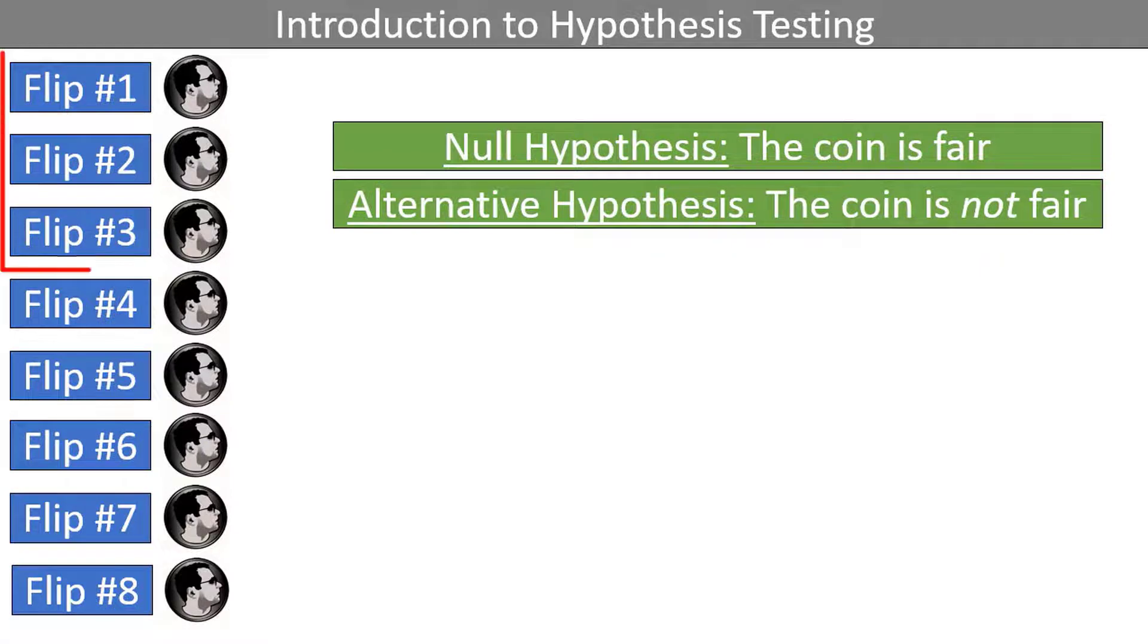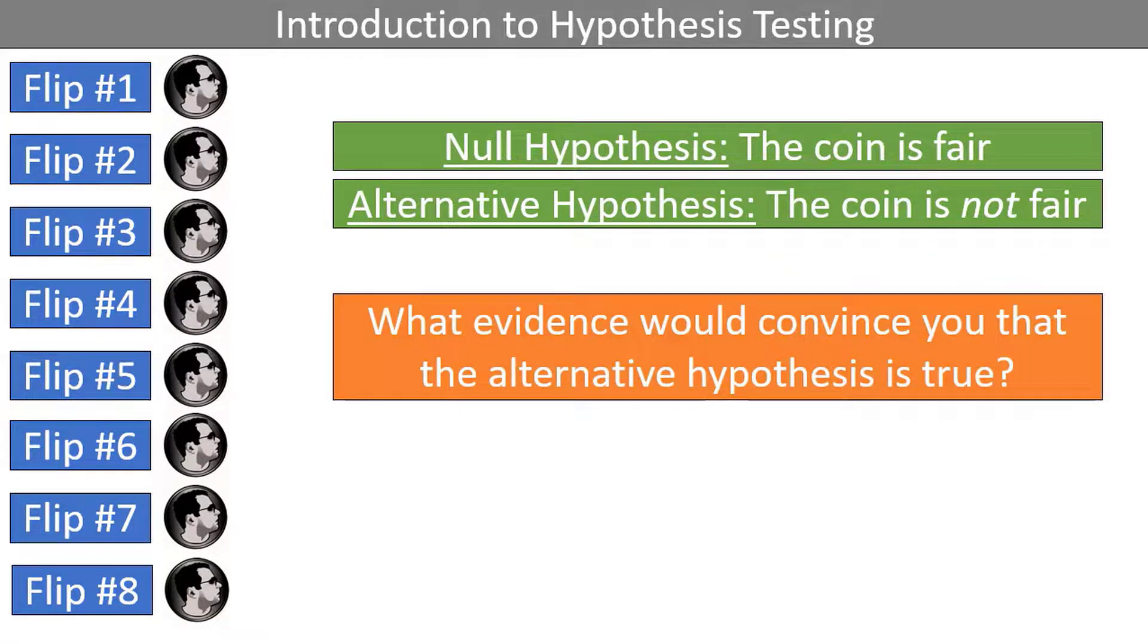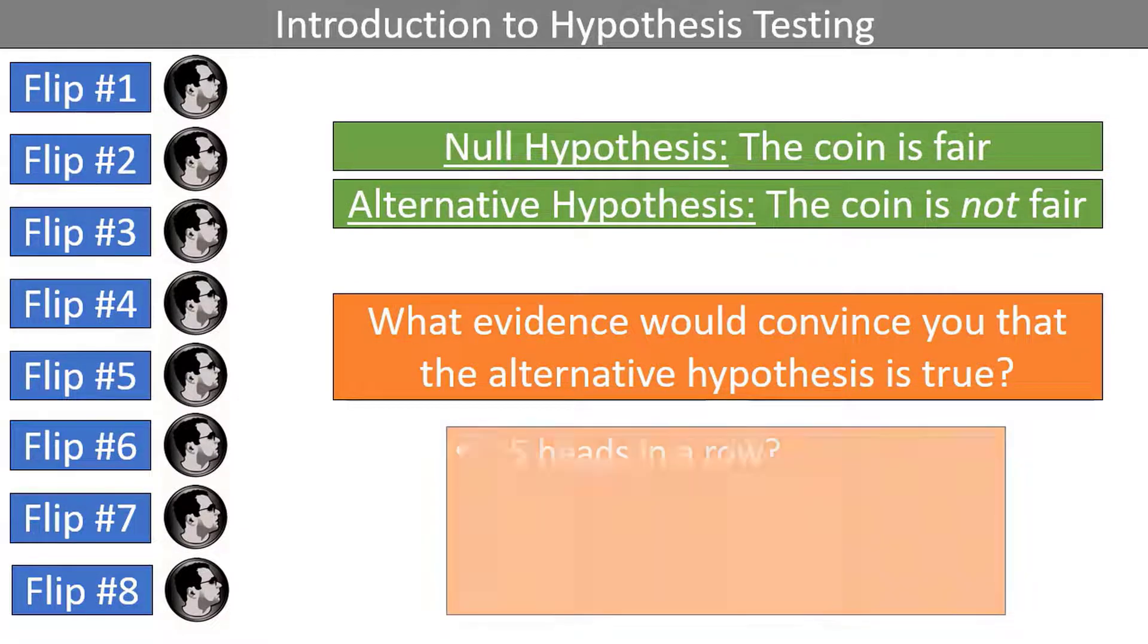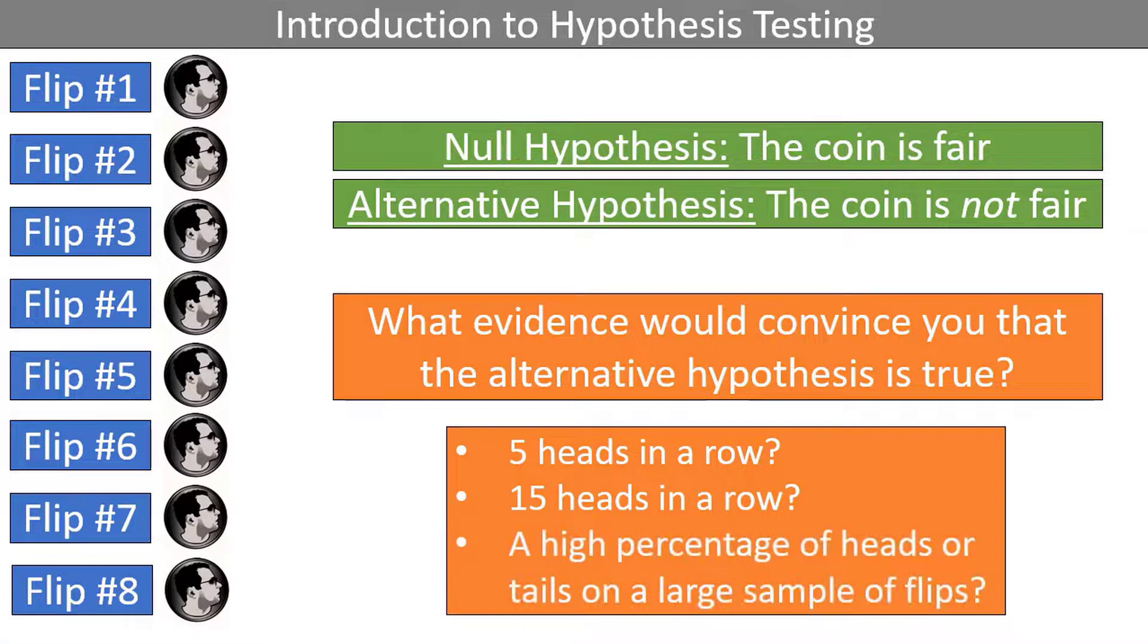When only 3 heads had been flipped in a row, that might not have seemed all that unusual. It isn't all that unlikely for a fair coin to turn up heads three times in a row. But at some point, the sample data becomes so inconsistent with the null hypothesis that we must adopt a more reasonable assumption, the alternative hypothesis. At what point we adopt the alternative hypothesis might be different for everyone. Maybe one person needs to see 5 heads in a row to conclude that the coin isn't fair, whereas someone else might want to see 15, or perhaps a high percentage of heads or tails on a large sample of flips, like 100.